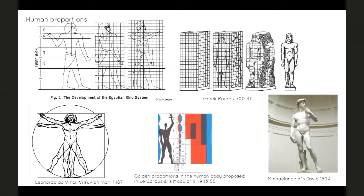Le Corbusier made the Modular, a proportional system based on the Fibonacci series — the golden ratio: 1, 1, 2, 3, 5, 8, 13, and so on. He believed these proportions were evident in the human body. The purpose of the Modular was to maintain human scale everywhere. He based designs of his buildings — doors, entrances, and all spaces — according to his Modular man. That's why in modern architecture you see a lot of small spaces with small doors, unlike the Renaissance when buildings were made big so humans could reach God.